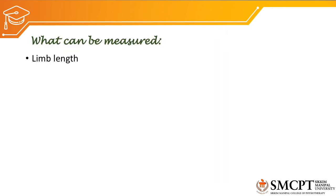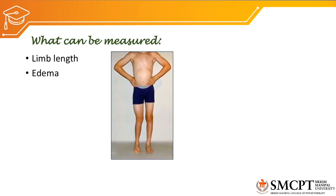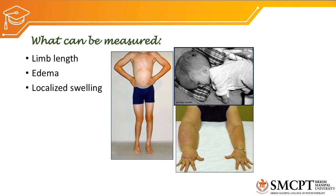What can be measured using anthropometric tools? We can measure limb length, which is very important for physical therapists so that we can see alterations or differences in the patient's body parts or limb. Another measurement we can take is for edema and localized swelling, which can occur in any part of the body. Edema means there is fluid collection in or around the tissues, and localized swelling could be due to inflammation or other conditions.